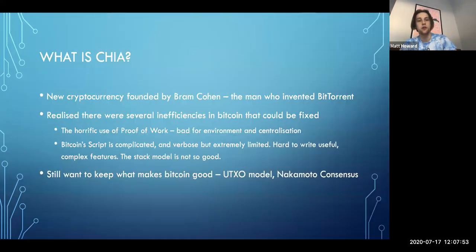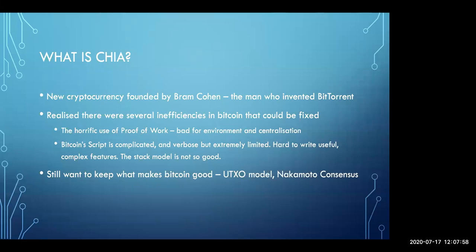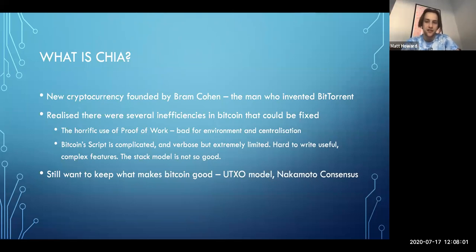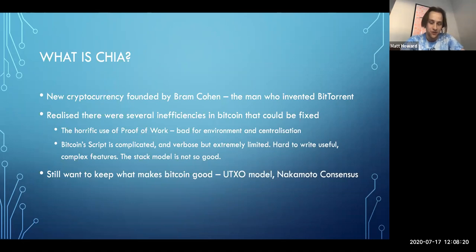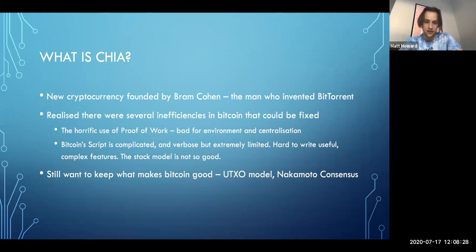Chia is a new cryptocurrency founded by Bram Cohen, the man who invented BitTorrent. His thoughts were that there were several inefficiencies in Bitcoin that could be fixed — the main one being the horrific use of proof of work, which is bad for the environment and leads to centralization. There's much literature on this. Also, the Bitcoin script is not very good: it's complicated and verbose but actually difficult to get anything useful out of.